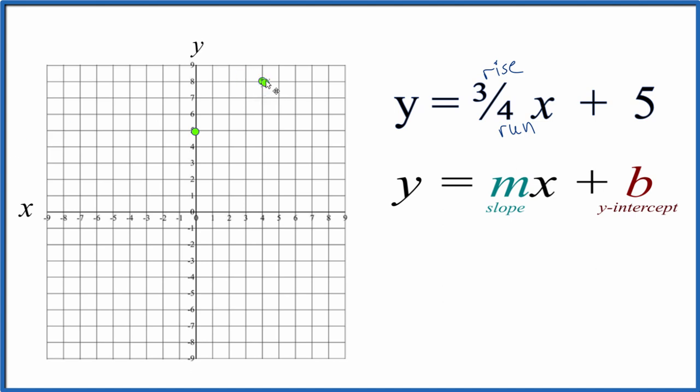And we could do that again from this point. We rise 1, 2, 3 and go over 1, 2, 3, 4. But we're kind of off our graph paper.